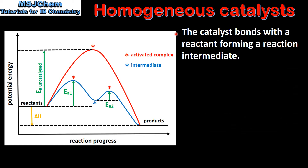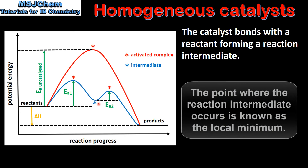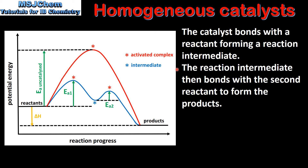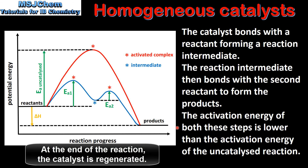In the first step the catalyst bonds with a reactant forming a reaction intermediate. The activation energy for this step is shown by this arrow. The reaction intermediate is located here at the lowest point between the two activated complexes. The reaction intermediate then bonds with a second reactant to form the products. The activation energy for this step is shown by this arrow. The activation energy of both these steps is lower than the activation energy of the uncatalyzed reaction.